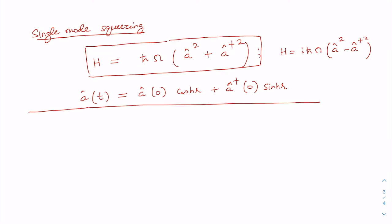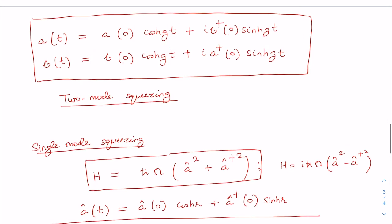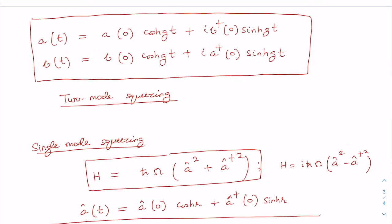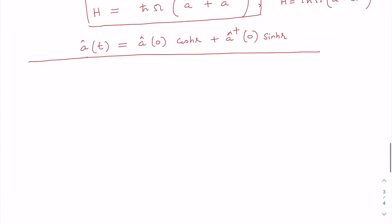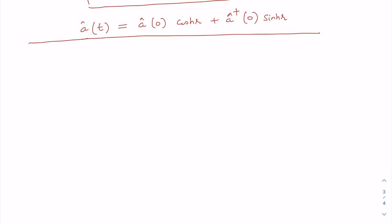In the present case, the scenario is different because unlike the single-mode case, the solutions involve both oscillators — a(0) contributes and so does the other oscillator. So individual modes are not getting squeezed or amplified; something else is getting squeezed.